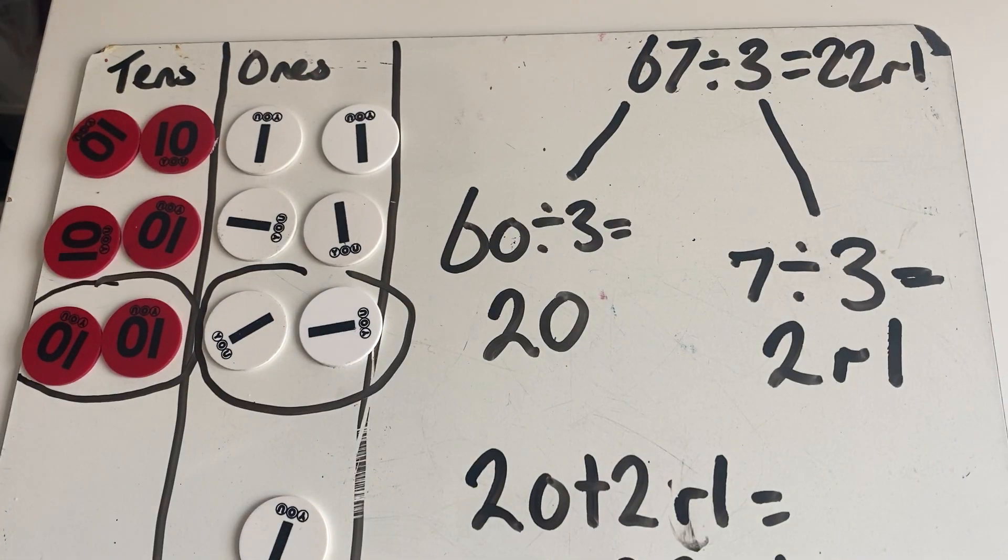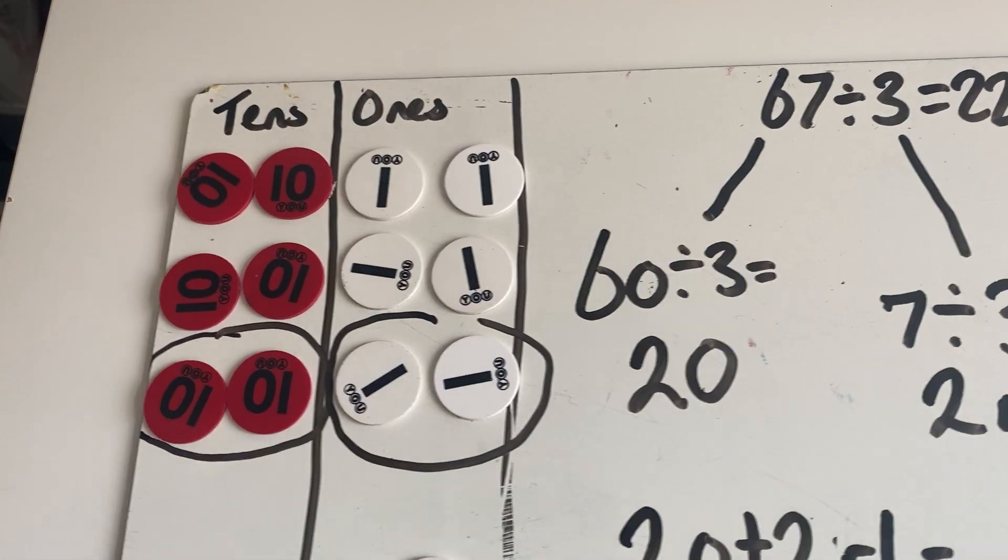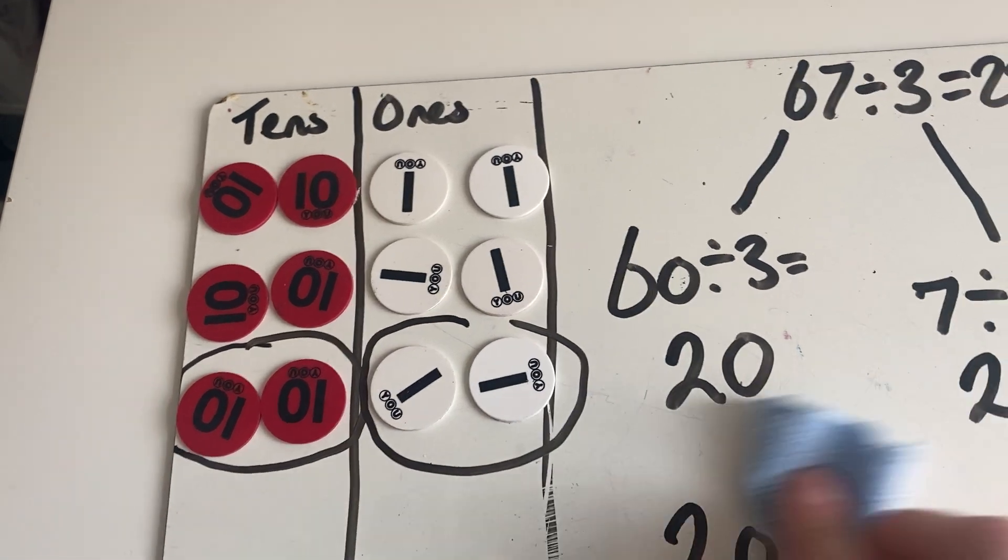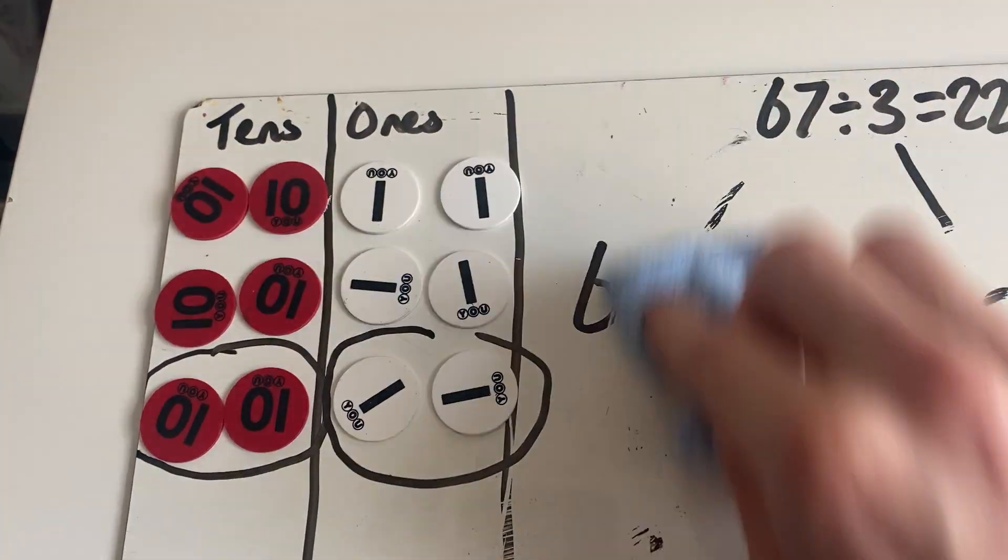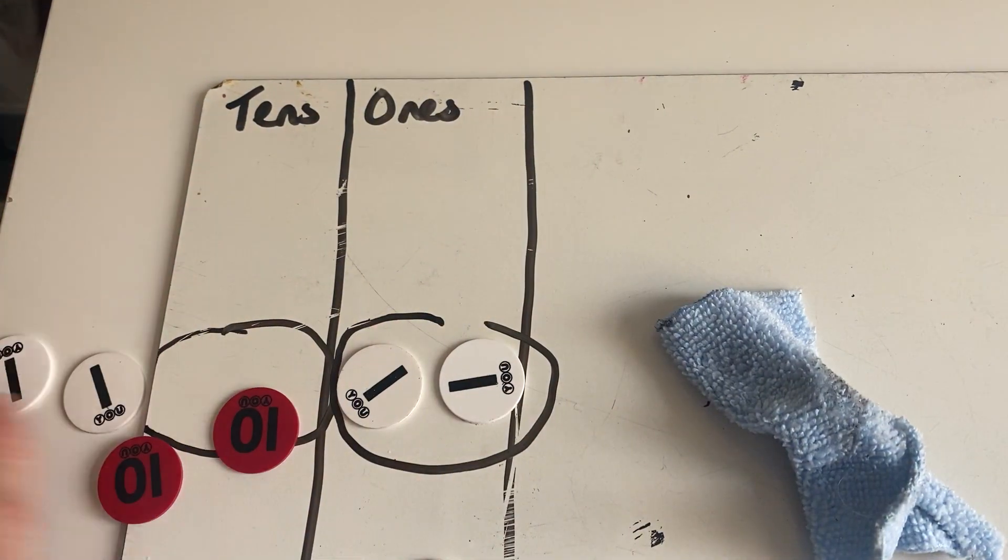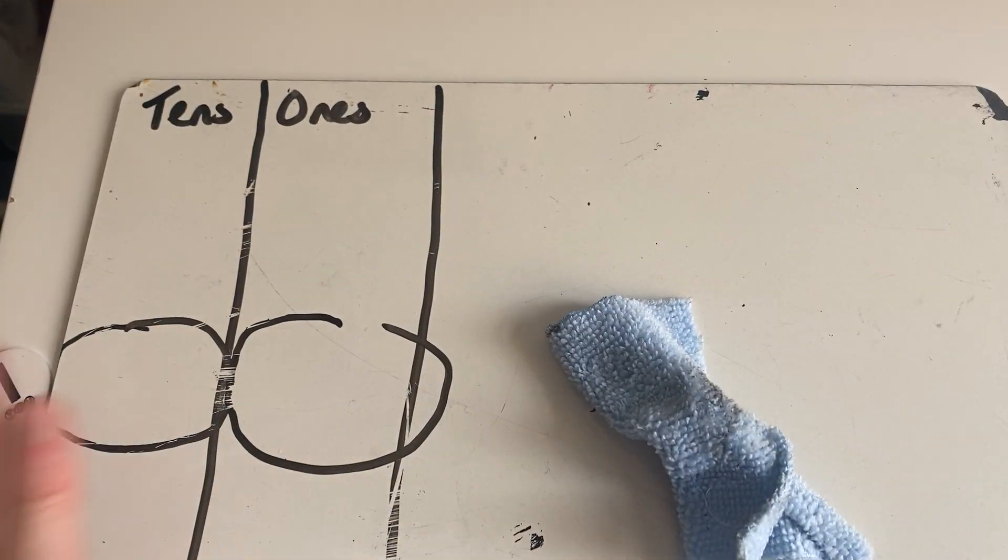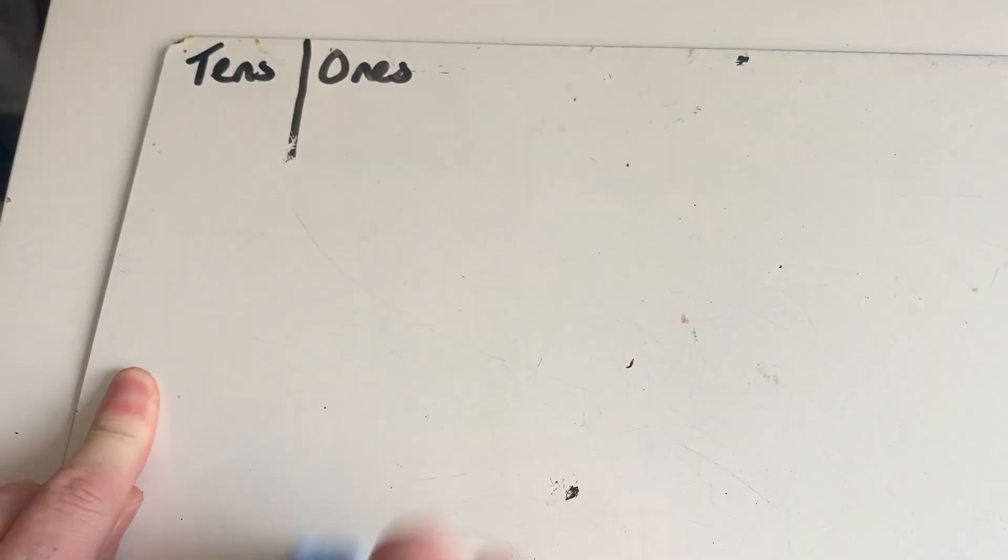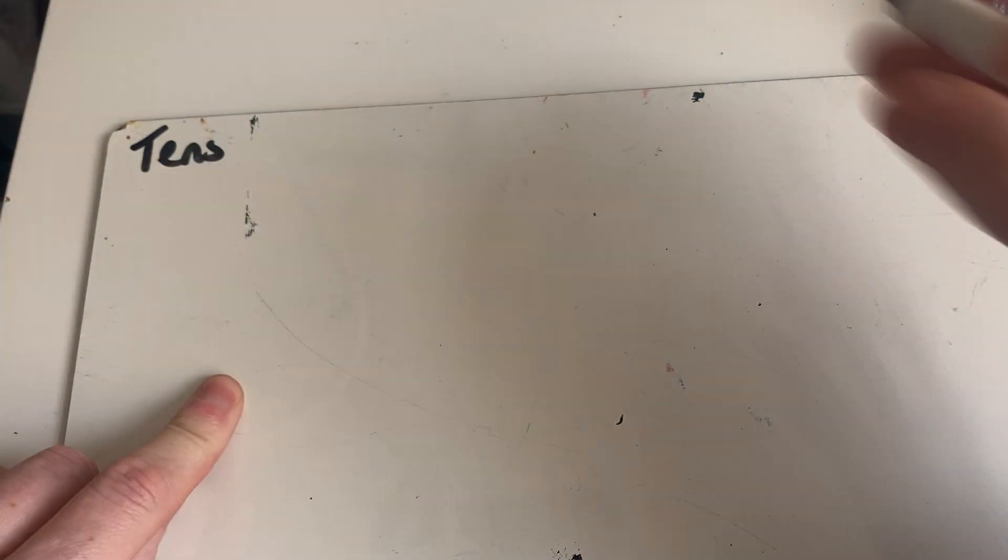We'll go for another example, and then I'm going to talk about how it's written in a written method using the short division that some of you may know already. So our next question is going to be 85 divided by 4. I'm just going to get my place value counters.